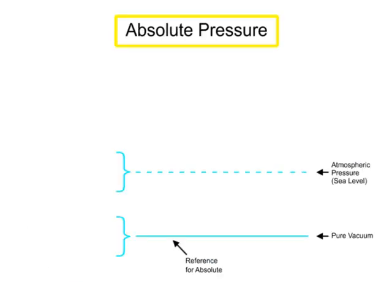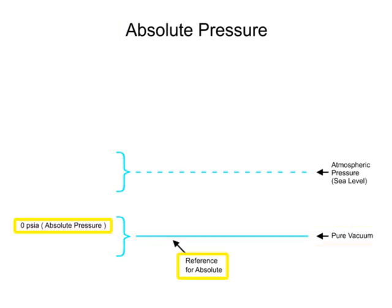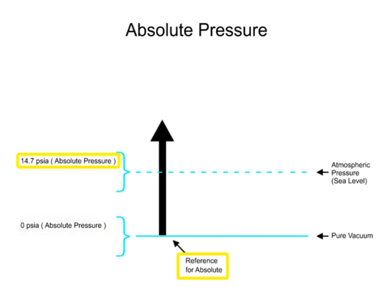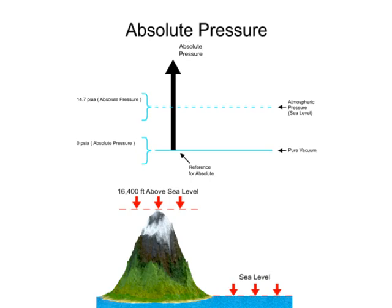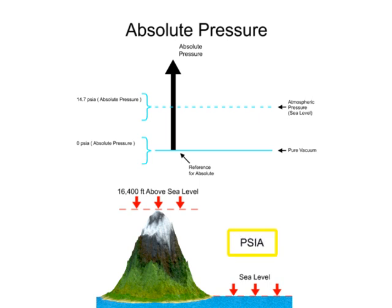The absolute pressure scale uses the absence of pressure, referred to as absolute zero, as a reference. In a pure vacuum, absolute zero occurs, and pressure readings can only be positive. The unit of measurement for absolute pressure is pounds per square inch absolute, abbreviated as PSIA.